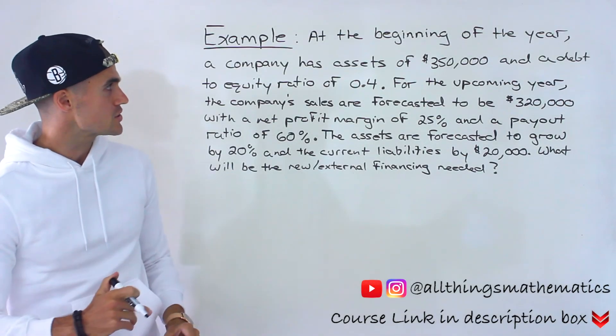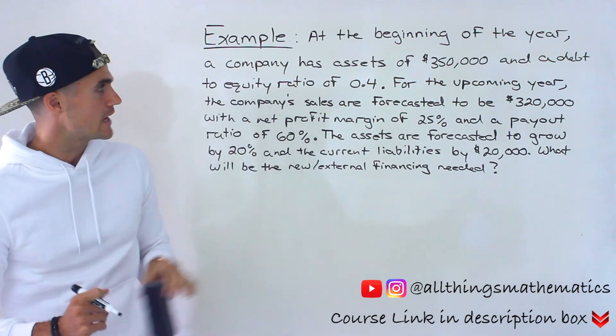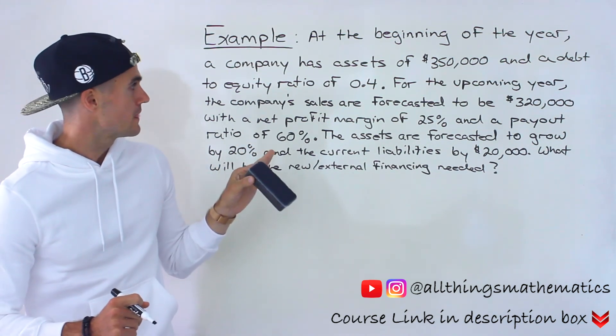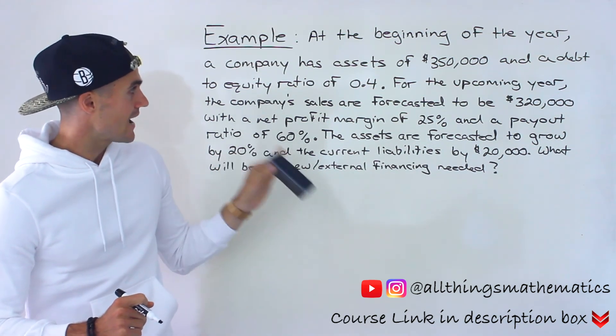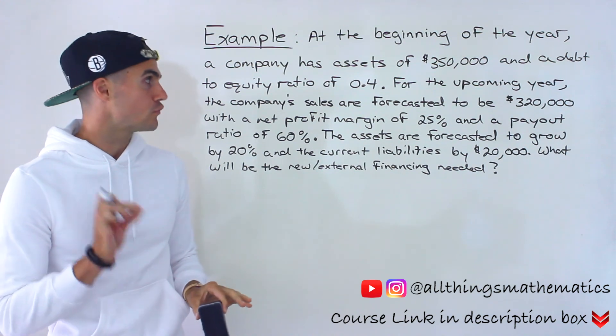Moving on to the next question. At the beginning of the year, a company has assets of $350,000 and a debt-to-equity ratio of 0.4.